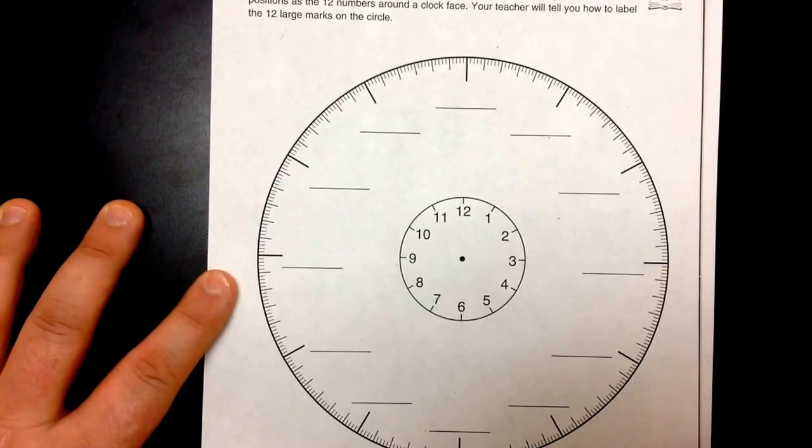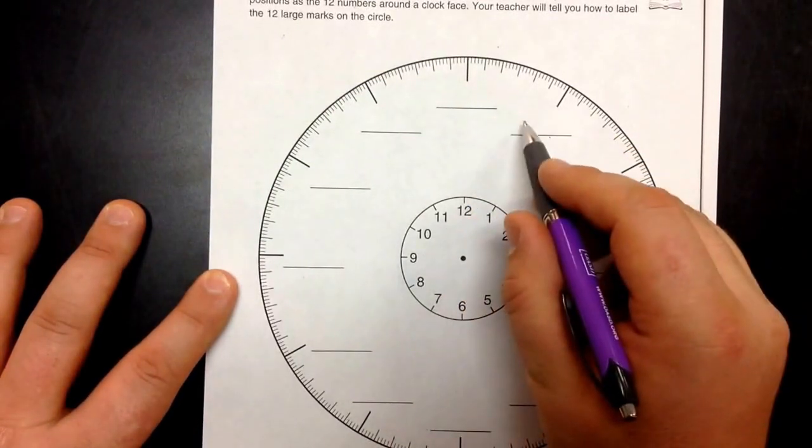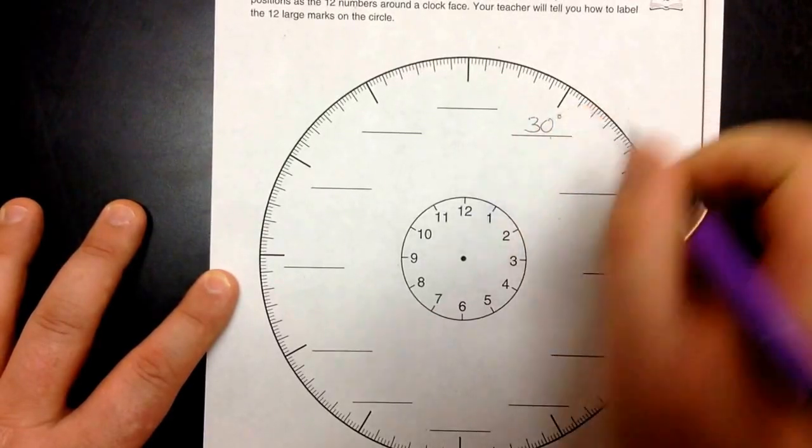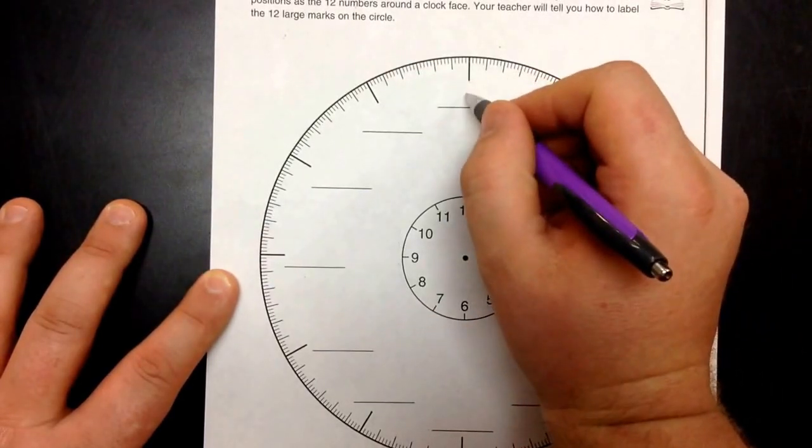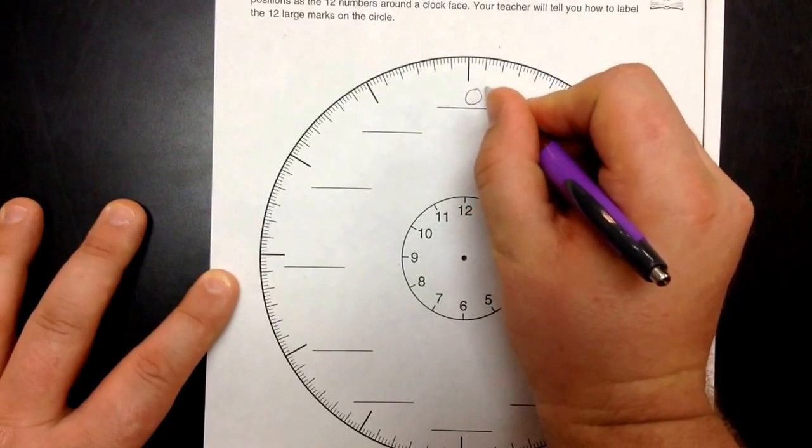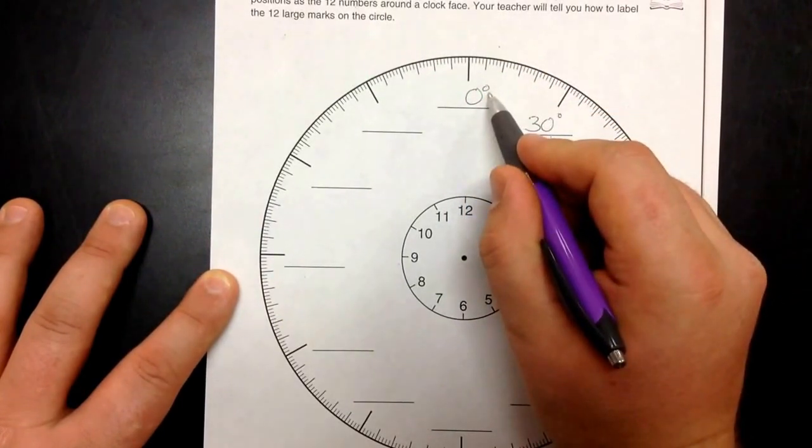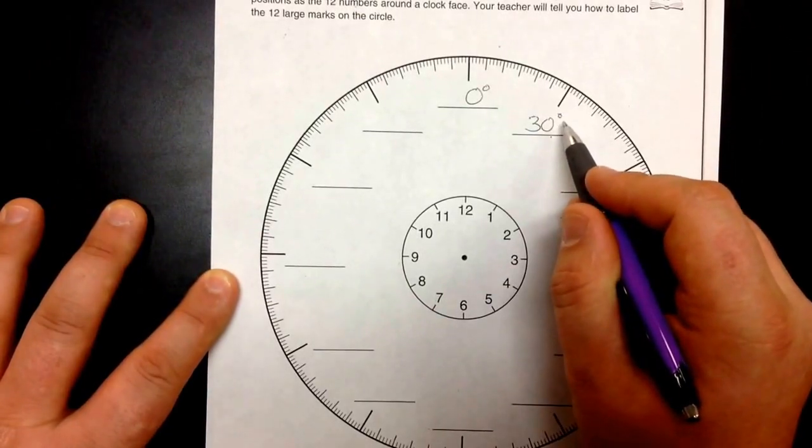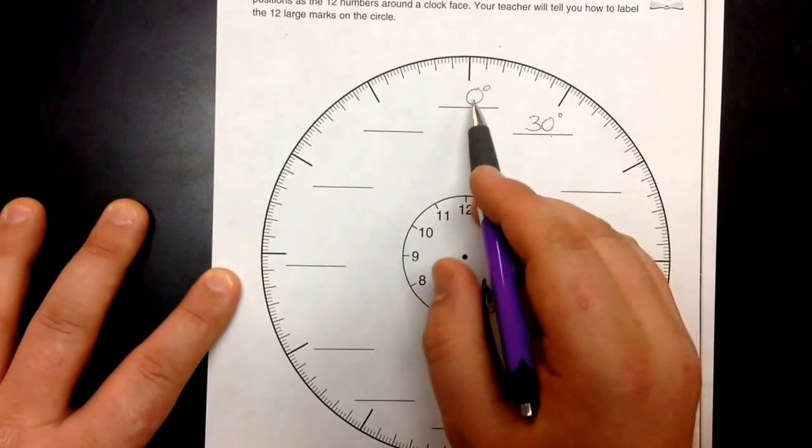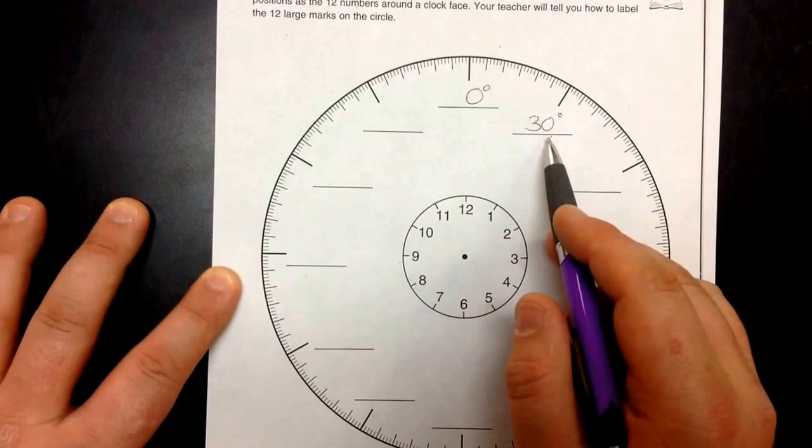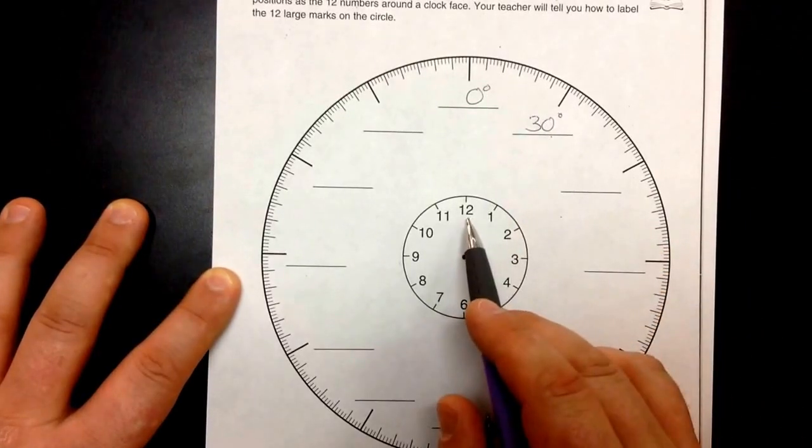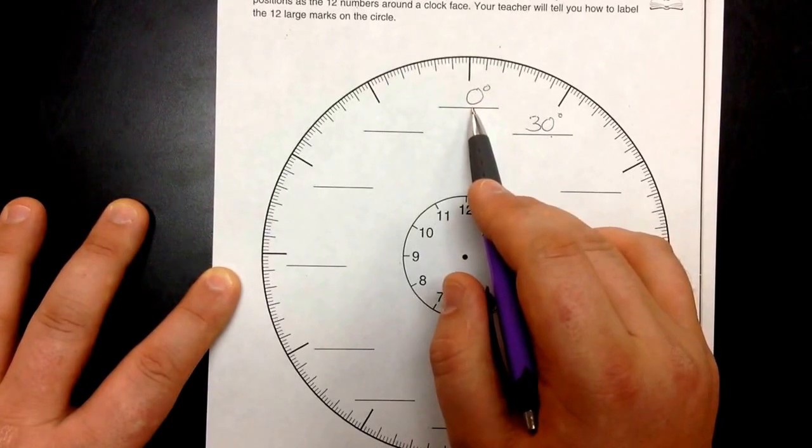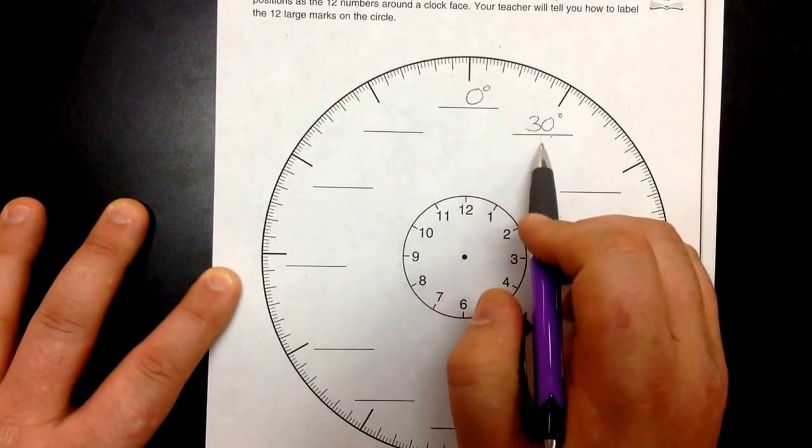Between each of the large marks on a protractor are 30 degrees. So we start here at our top one at zero degrees. The little mark here, that's our degree mark. So I want to make sure we label these numbers so we know how we're using them. This is our zero and we move to 30. Normally we go from 12 to 1 on a clock. On a full circle protractor, 0 to 30.